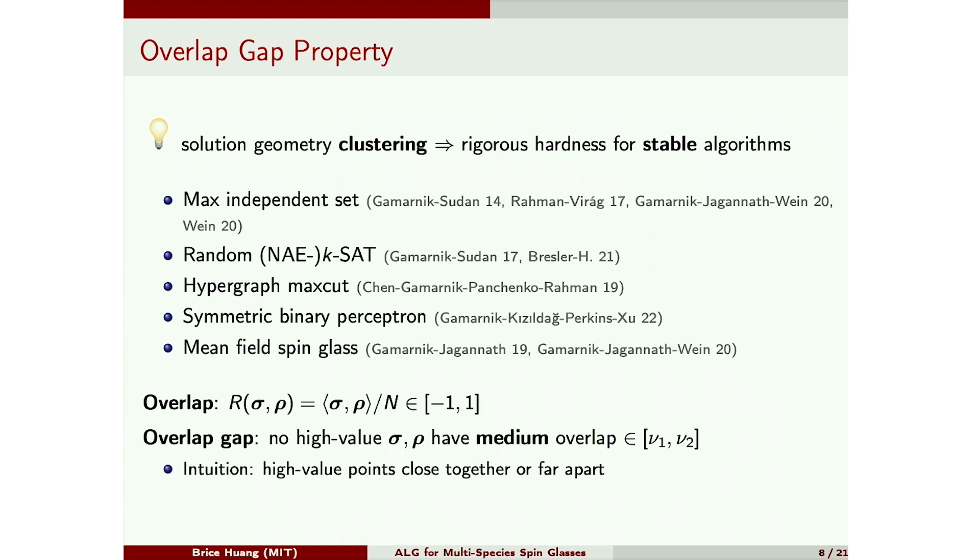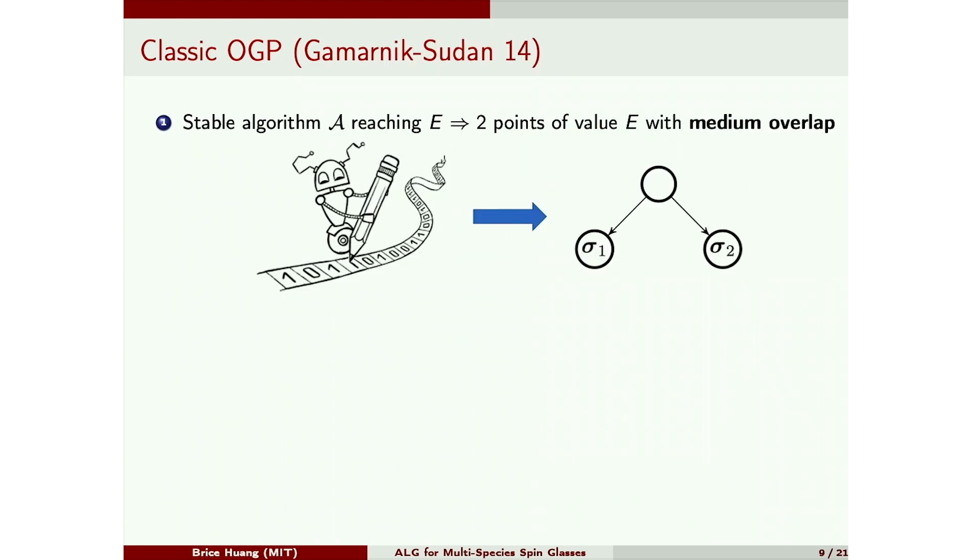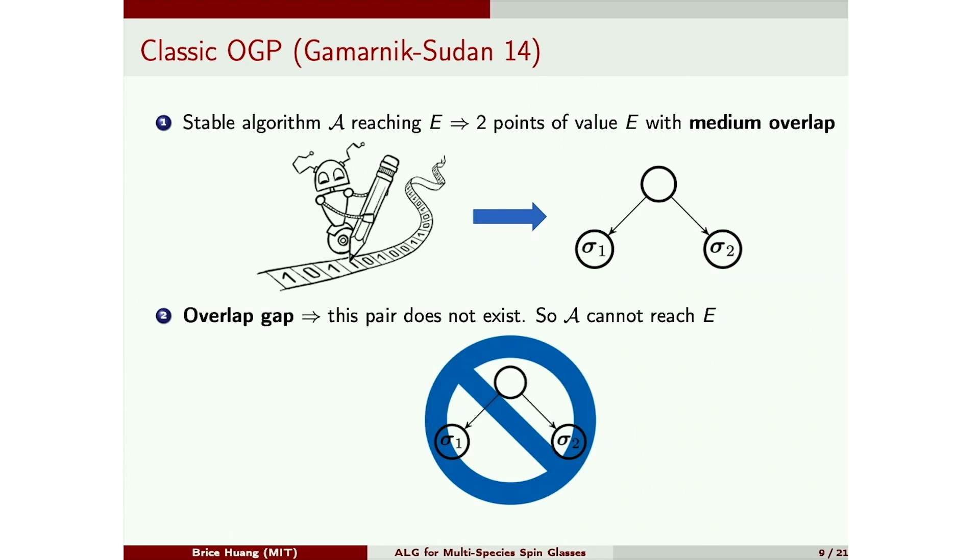Let's now see why this ought to imply hardness. This argument is due to Gamarnik and Sudan, and in light of later work, we call this the classic OGP. So the argument goes, suppose a stable algorithm can reach some value E, then we show somehow that this can be used to construct not just one point of value E, but a pair of points with this value and medium overlap. On the other hand, by the overlap gap property, such a pair can't exist, so then by contradiction, the algorithm cannot reach this value E.